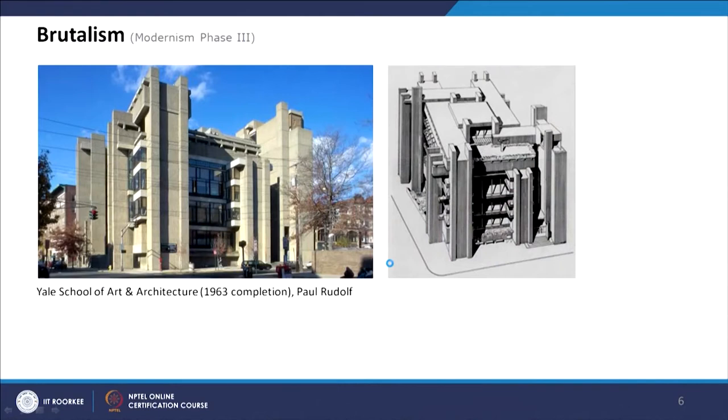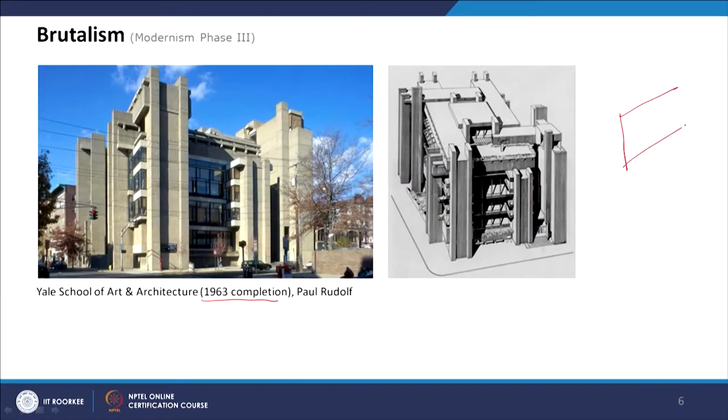An example of the brutalist movement is Yale School of Art and Design — called Rudolph Hall, designed by Paul Rudolph, completed in 1963. This example also falls under neo-brutalism because it has features of both metabolism and brutalism. From outside, the building is made of concrete visible from outside — no plaster is applied. The form work of the concrete is visible. Form work is the outside skeleton — steel or wooden — which is designed before construction, and the concrete is poured within it.